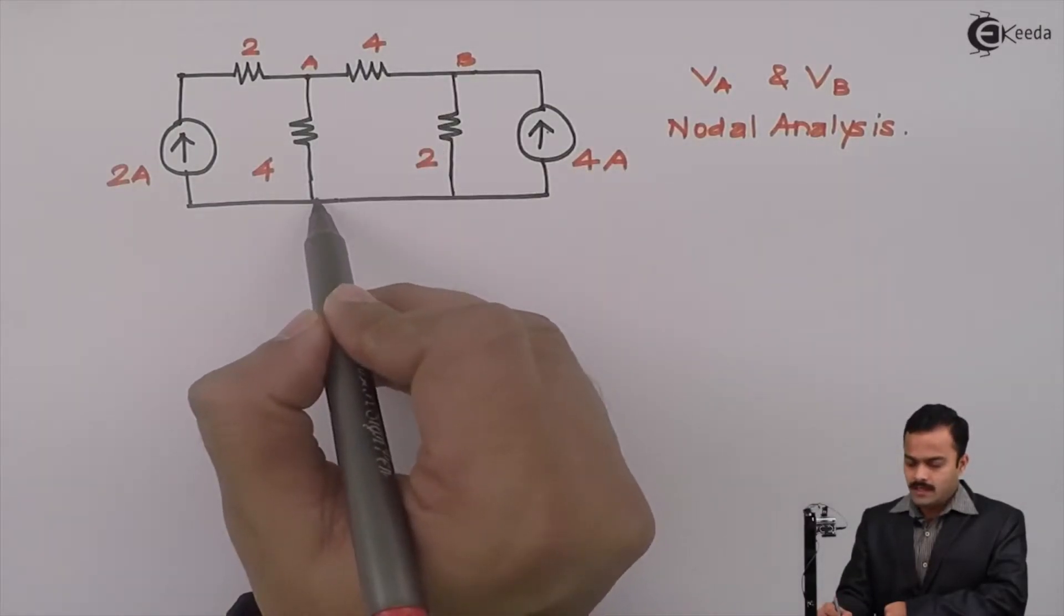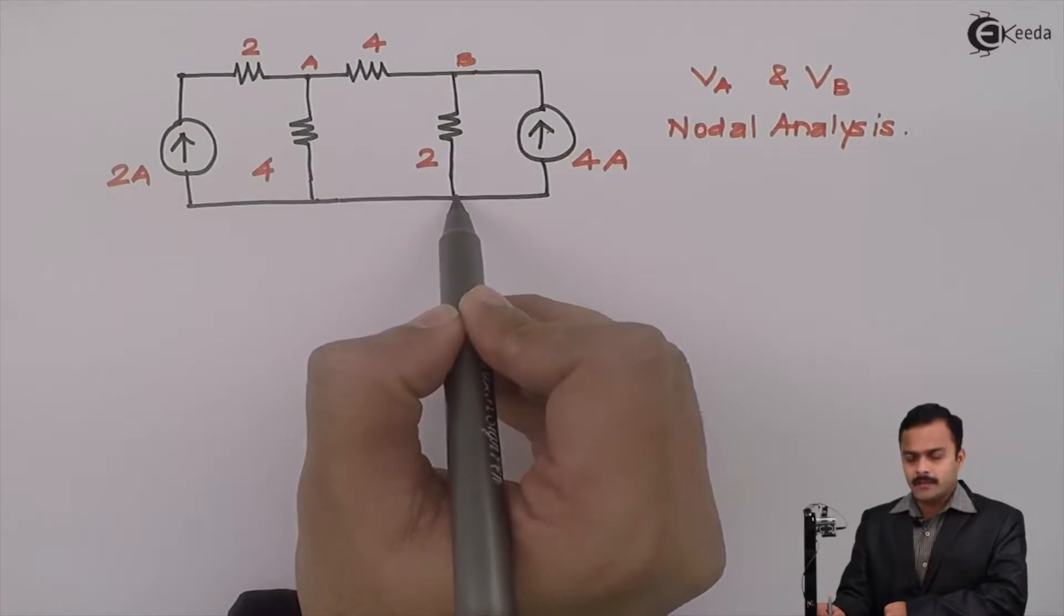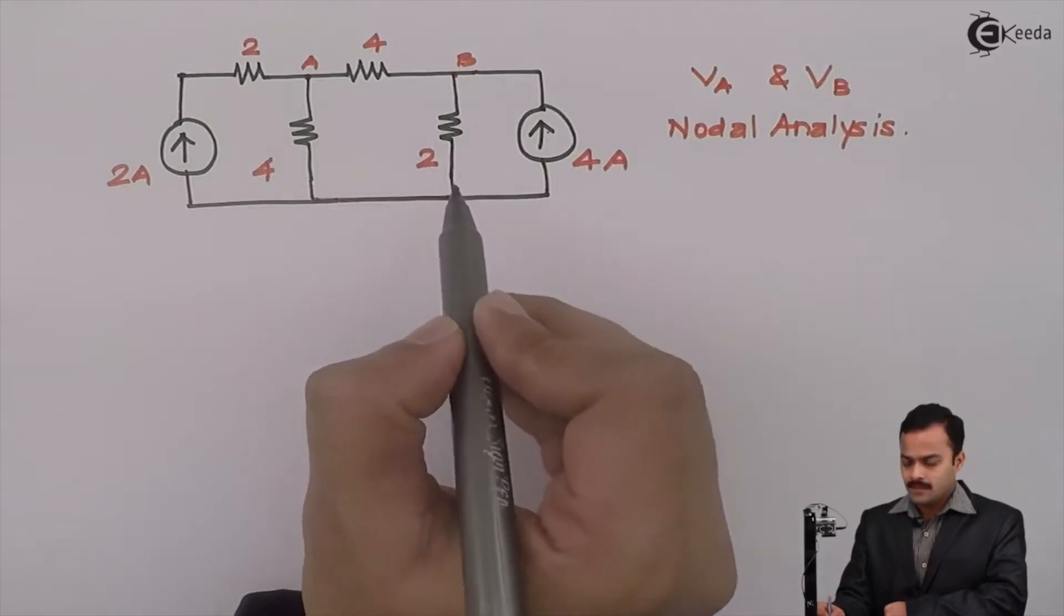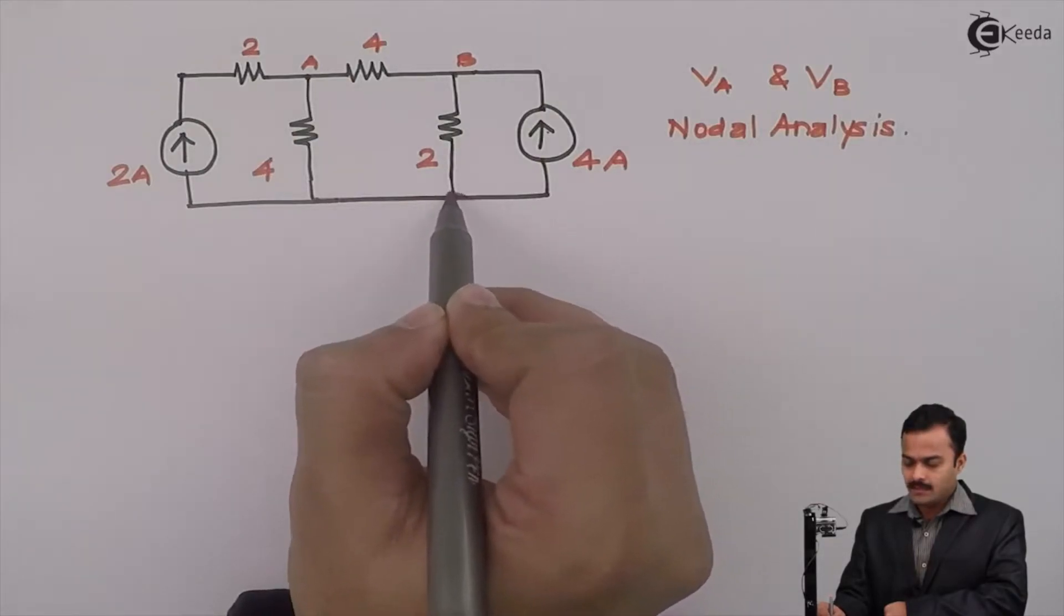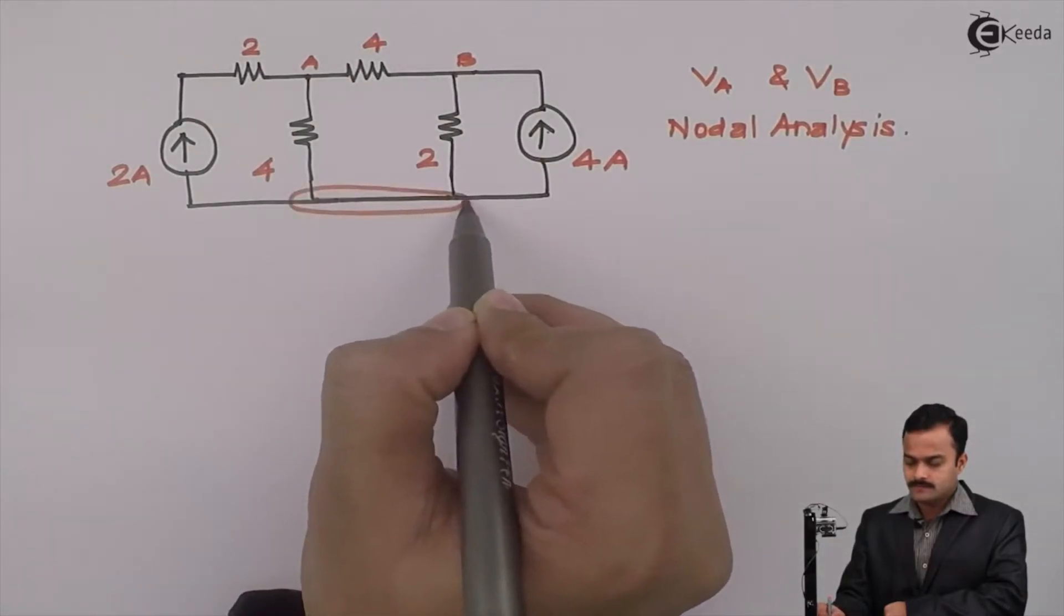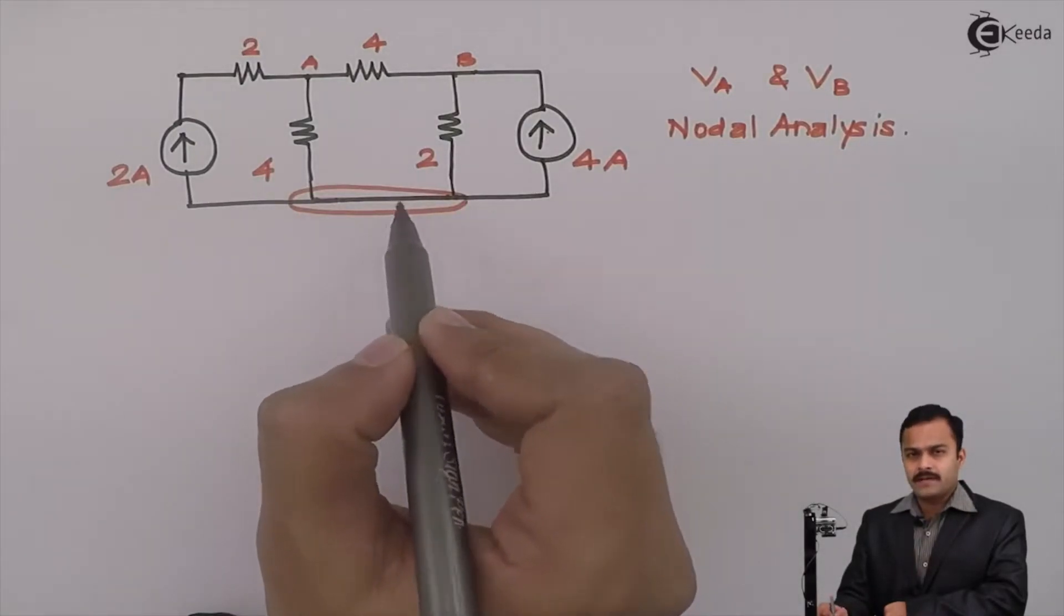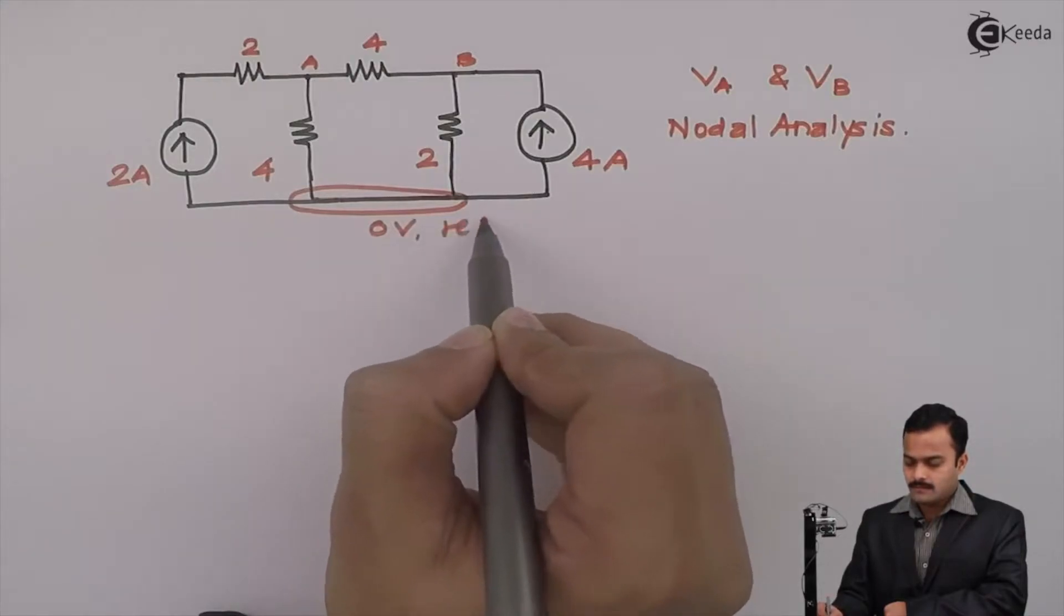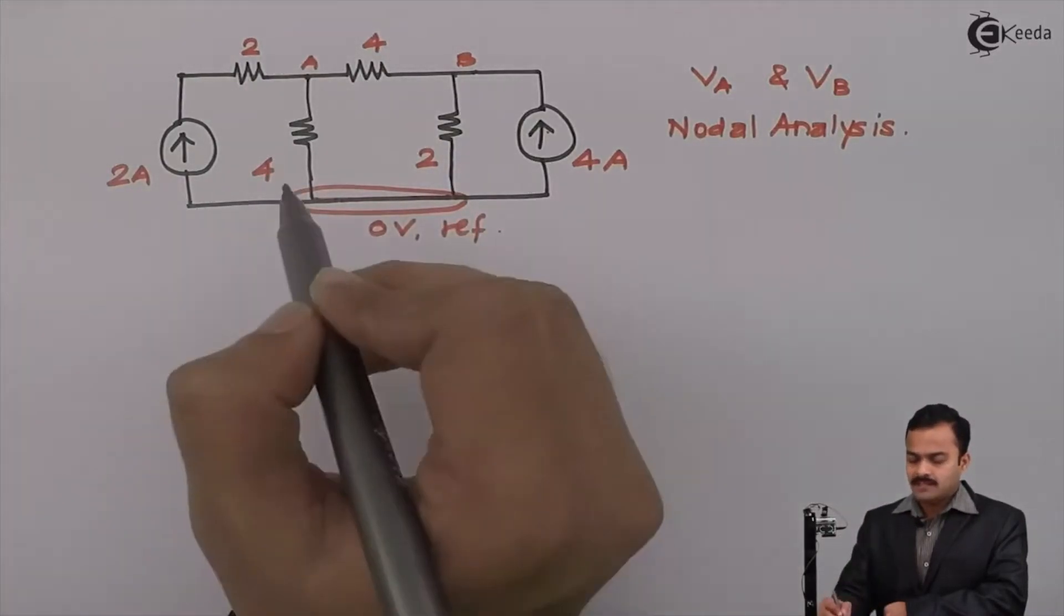Now here I don't have any element present between these two points. So these two points are same. So I can consider this is a 1 point. And I will consider this point as a reference meaning it will have the voltage 0. So in all I am having 3 nodes out of that one I have taken as a reference. So let's apply KCL to other 2 nodes.